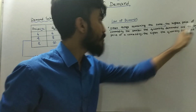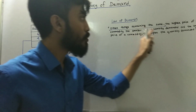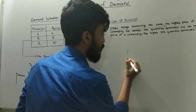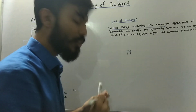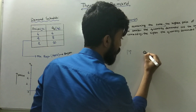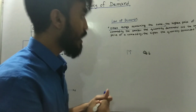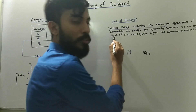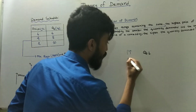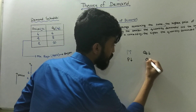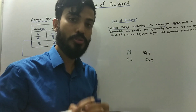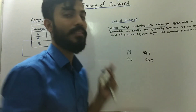The higher the price of a commodity, the smaller the quantity demanded. And the lower the price of a commodity, the higher the quantity demanded. So the law of demand holds when all other things remain the same.